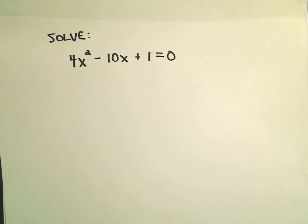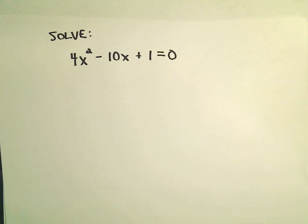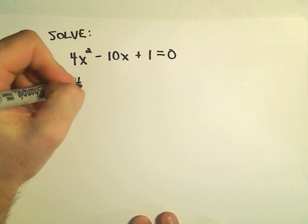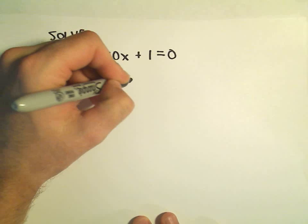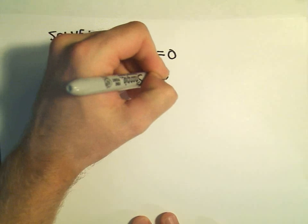The first thing I'm going to do is keep the x's on one side and put the number on the other. So I'm going to subtract 1 from both sides. If I subtract 1 from both sides, that'll leave me with 4x² - 10x = -1.